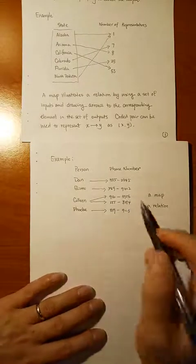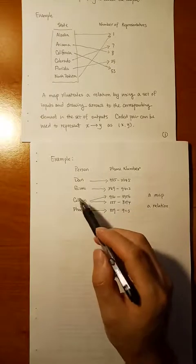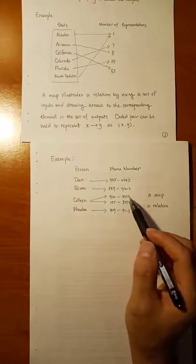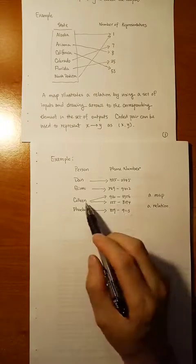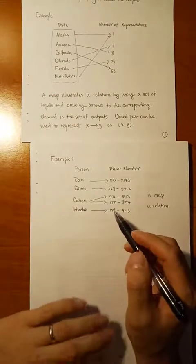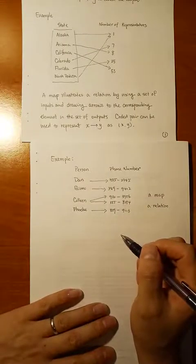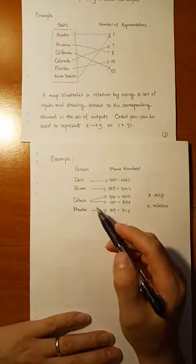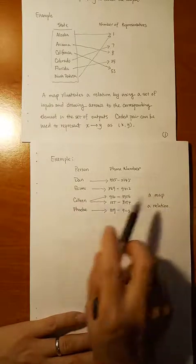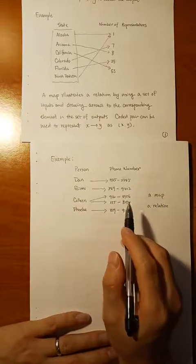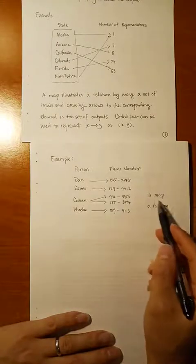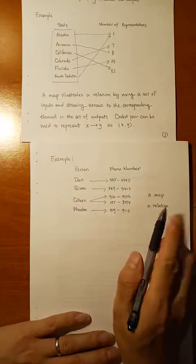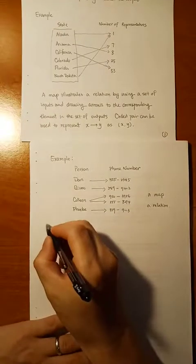This is a relation — Calling corresponds to a phone number, and the phone number depends on Calling. However, this is not a nice map because from Calling there are two arrows out. We want a special type of relation or map so that from one input, there is only one output. We do not allow multiple outputs from a single input.